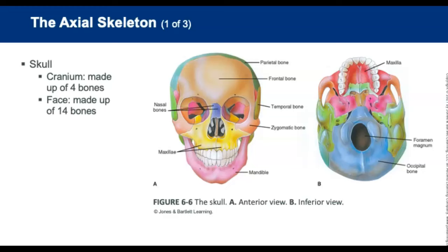Facial bones consist of 14 different bones. The maxilla is the upper jaw bone. The zygomatic bones are the cheekbones. The mandible is the lower movable portion of the jaw. The orbits, or eye sockets, include the zygomatic, maxilla, and frontal bones of the cranium. The nasal bones are short bones that form the bridge of the nose.